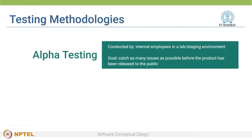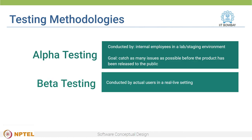So how is testing actually done? There are several testing methodologies. For example, alpha testing is done by internal employees of a company in a lab or a staging environment. The goal of the alpha test is to catch as many issues as possible before the product has been finally released to the public. Then there is beta testing — beta tests are conducted by actual users in a real life setting.